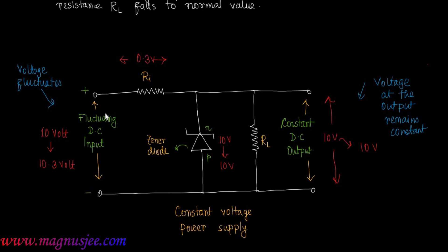That is the working of a Zener diode as a constant voltage power supply. Today up to this point; next day we shall discuss what is a rectifier and transistor. Thank you.